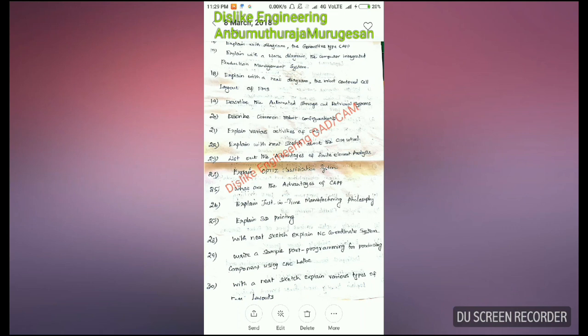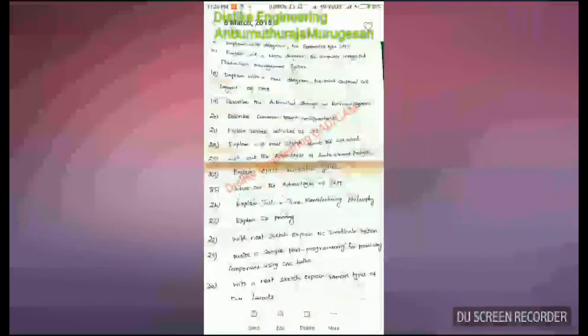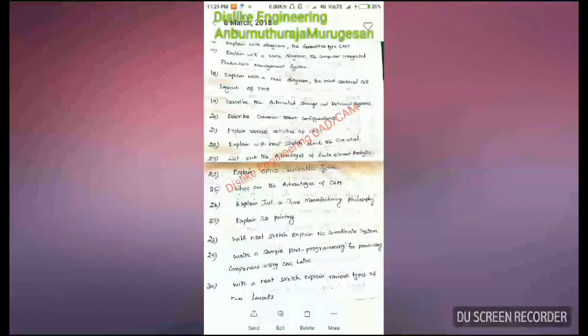The twenty-first question is: explain various activities of CAD. The twenty-second question is: explain with a neat sketch about the Sim Wheel. The twenty-third question is: list out the advantages of Finite Element Analysis. The fifteenth question also covers FMS advantages. The twenty-fourth question is: explain the OPITZ Classification System.